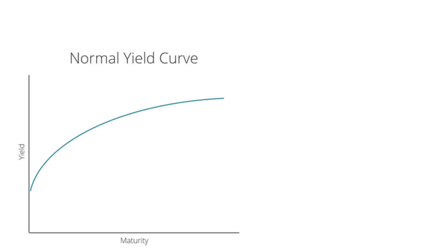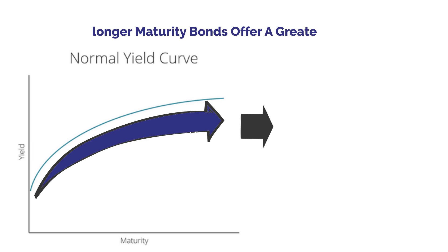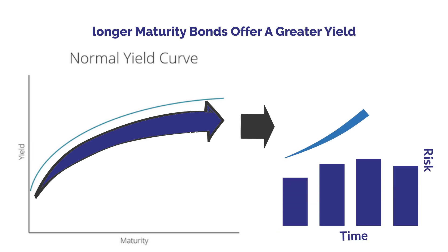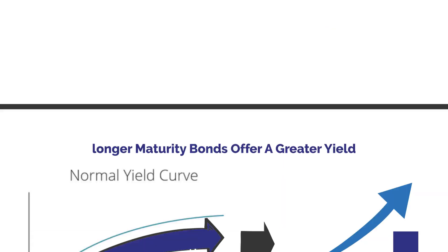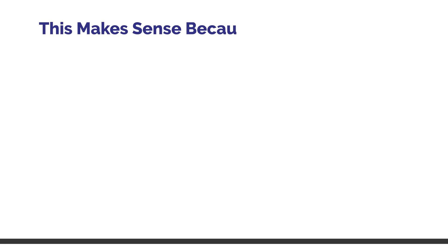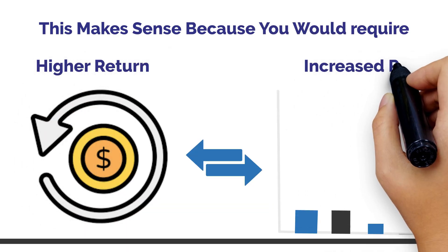A normal yield curve is one in which longer maturity bonds offer a greater yield than shorter maturity bonds due to the risks involved with time. This makes sense because you would require a higher return the longer to maturity to compensate for the increased risk.